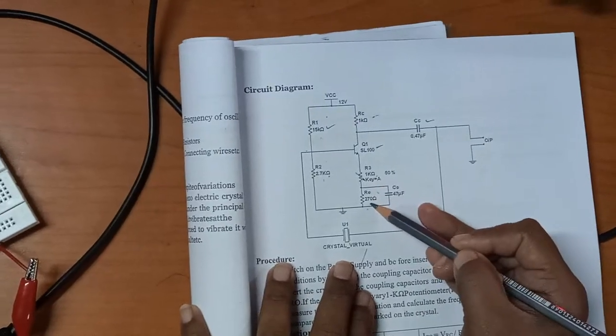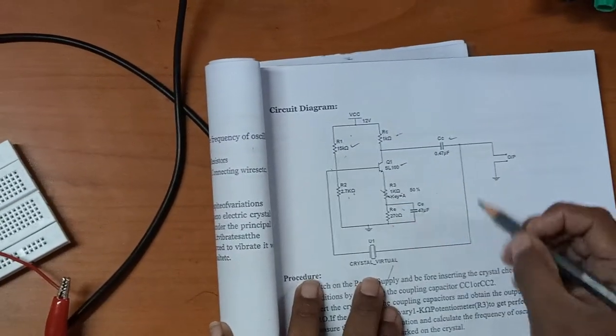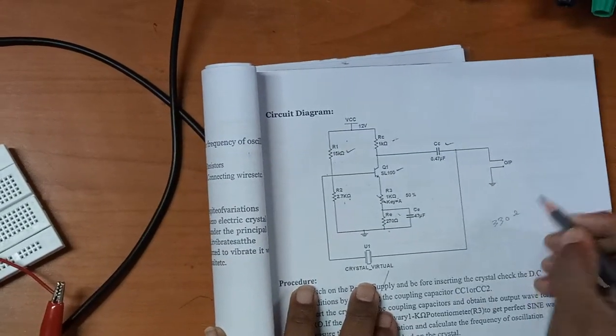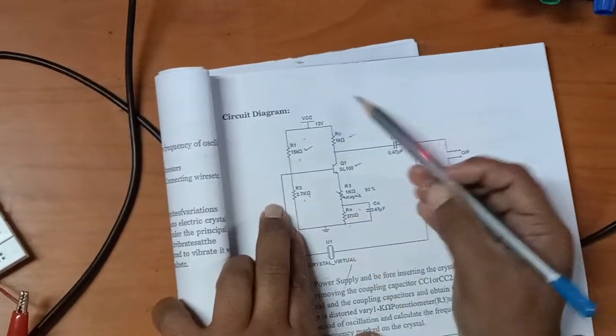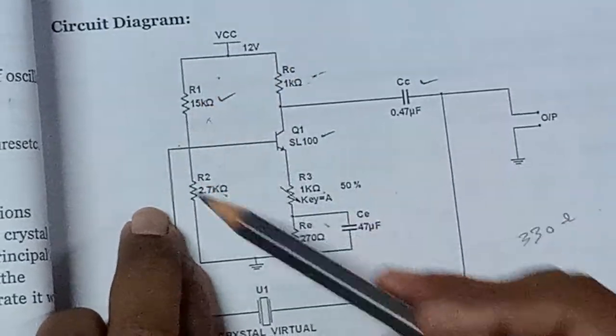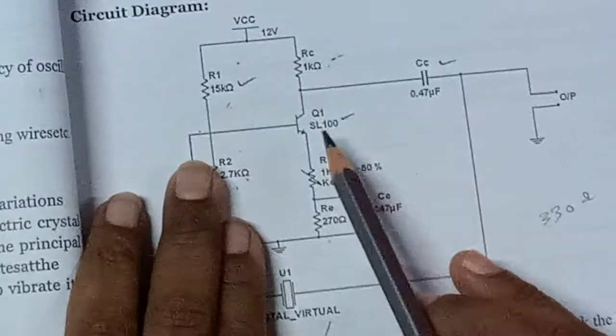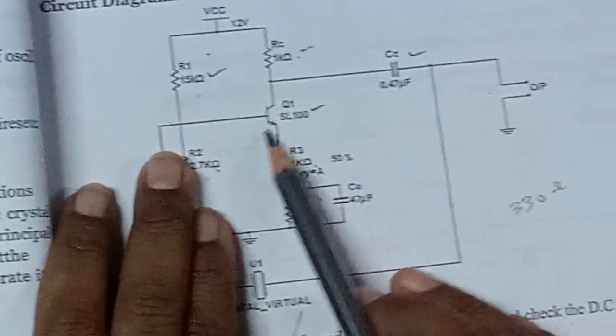15k is 1k, 2.7k is R2, and 1k is RC value. The transistor will work at saturation points. When working at saturation, this circuit will work as an amplifier.